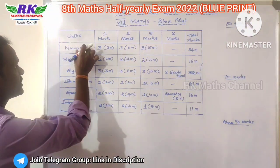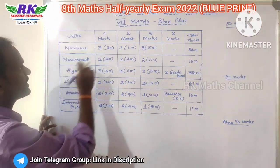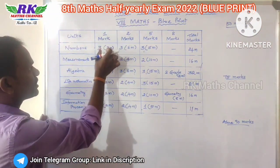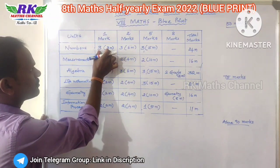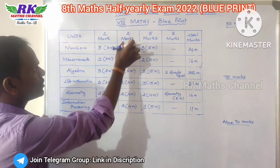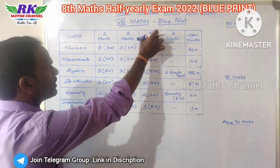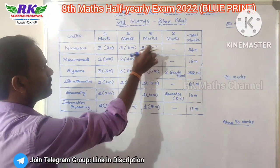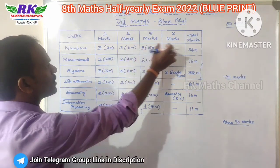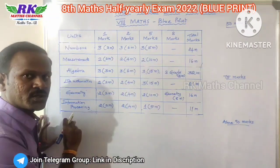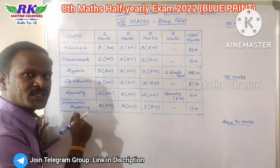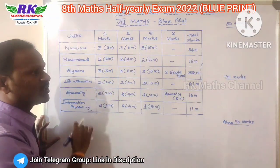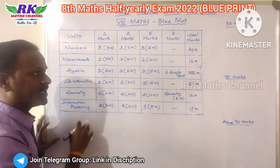Now, first chapter: Numbers. You can see that one mark — three questions. Two marks — three questions. Five marks — three questions. The total for this chapter is 24 marks. In the first chapter, there are 24 marks.